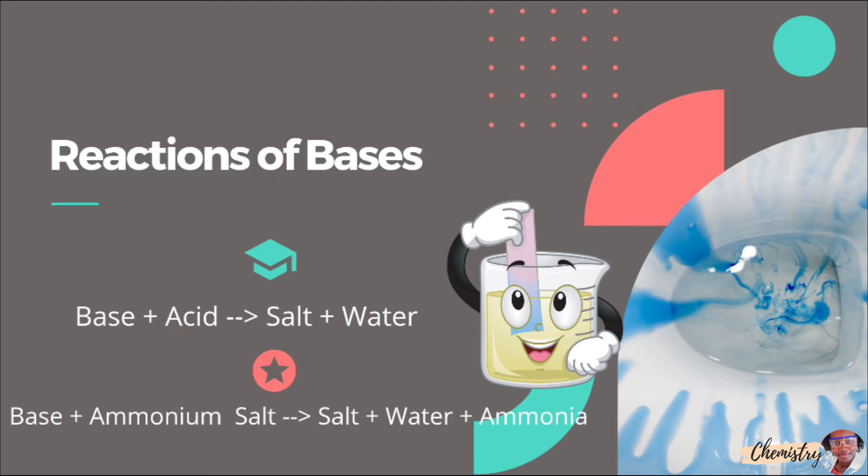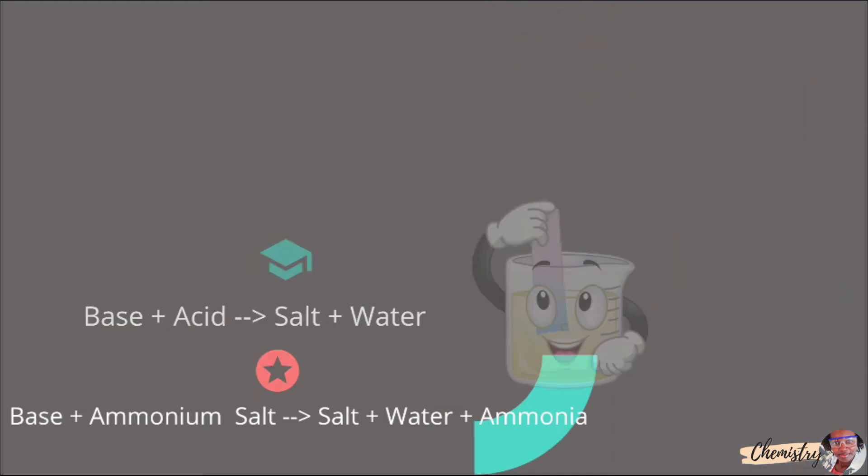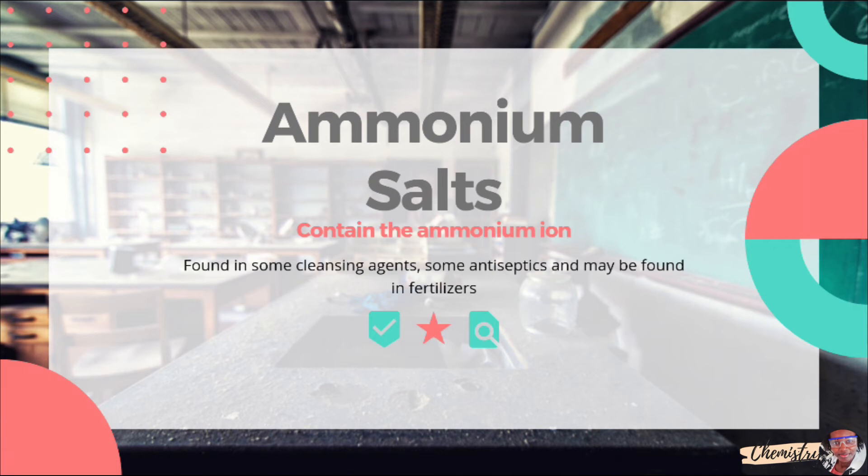...and the reaction of a base with an ammonium salt. When a base reacts with an ammonium salt, the products are salt, water, and ammonia. Now let's look at what an ammonium salt is.